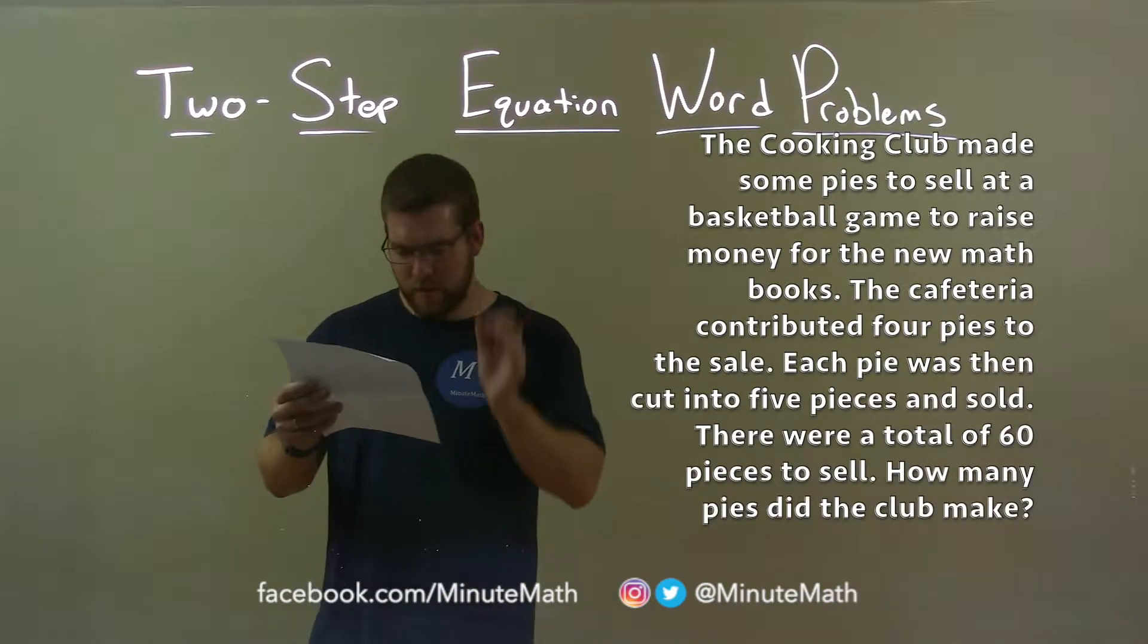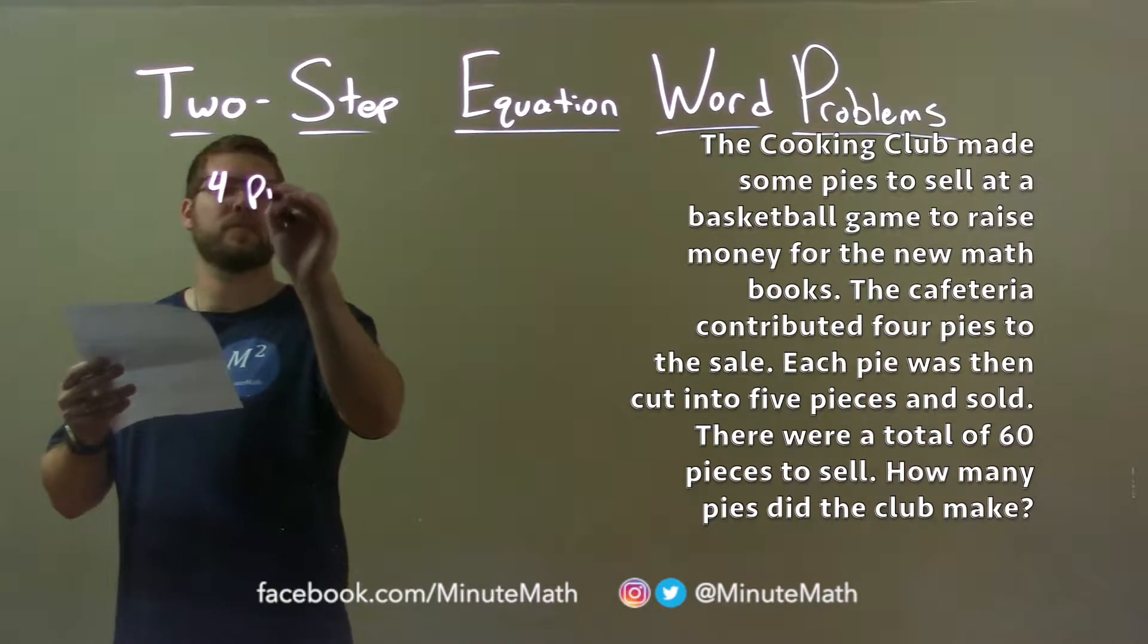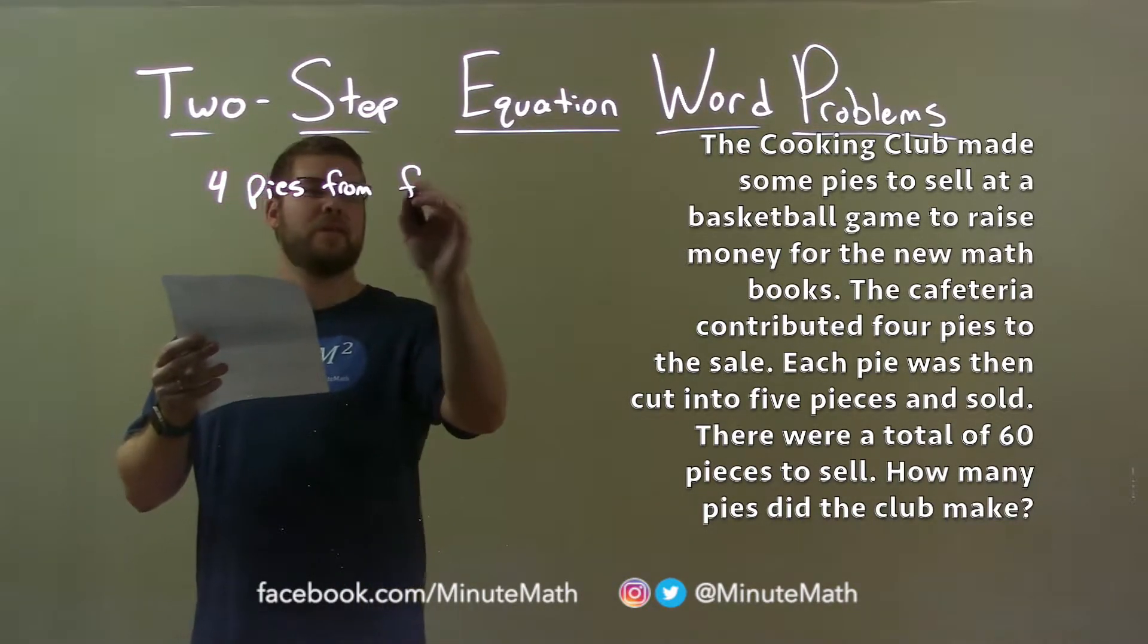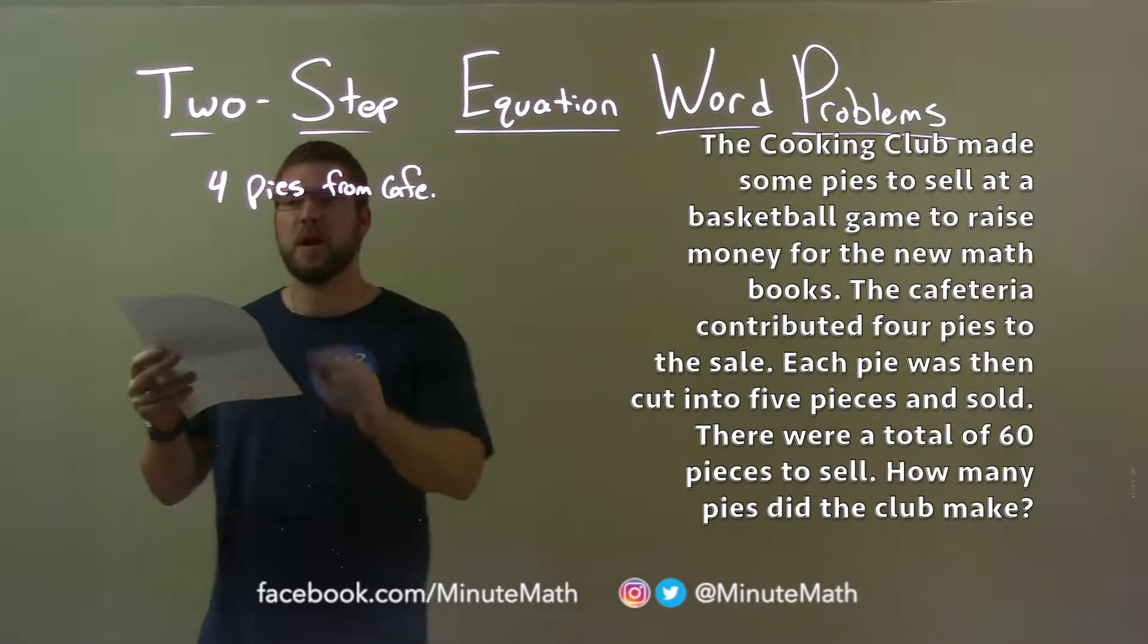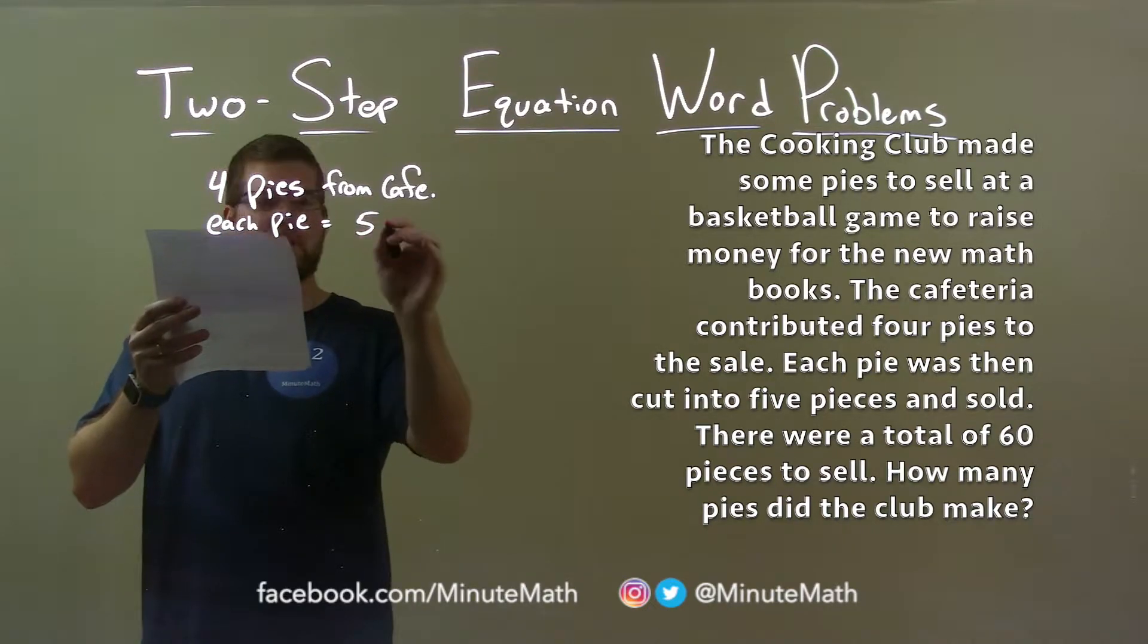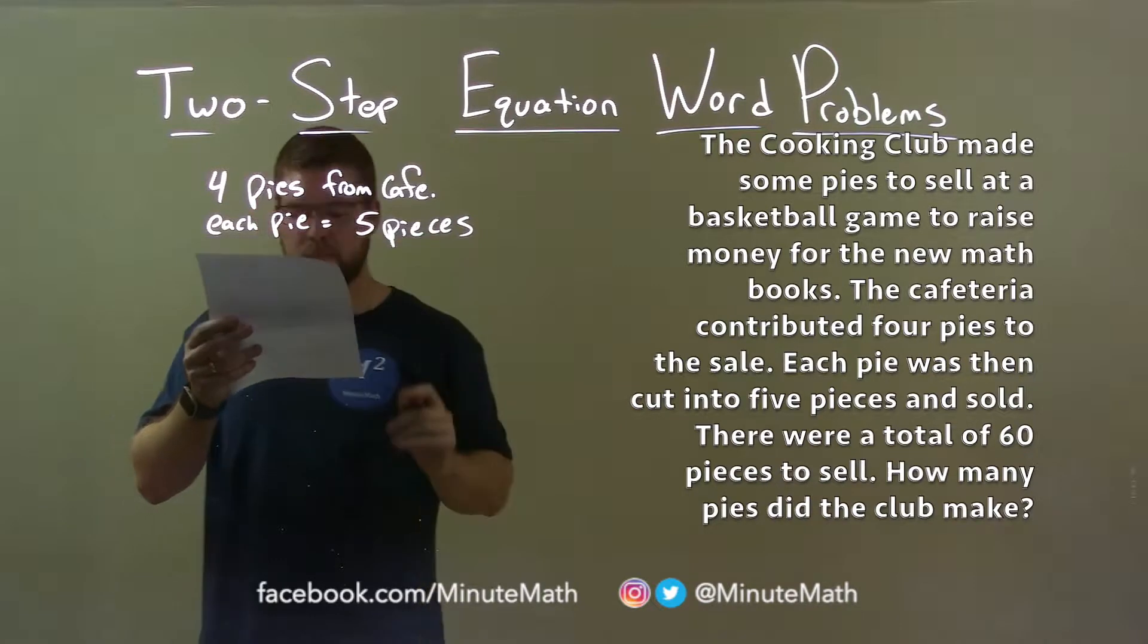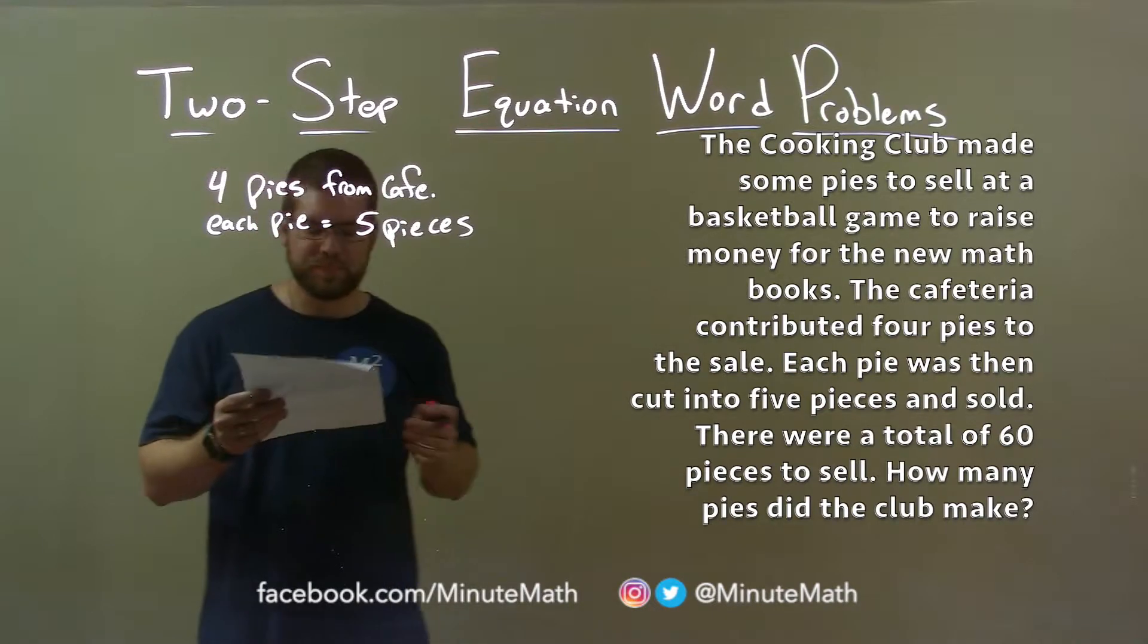So a few things we need to break down here. The cafeteria contributed four pies. Each pie equals five slices, five pieces. And we want to figure out how many pies did the cooking club contribute.